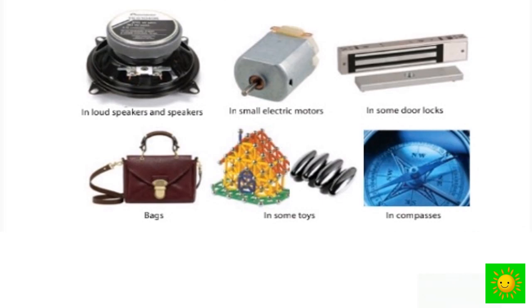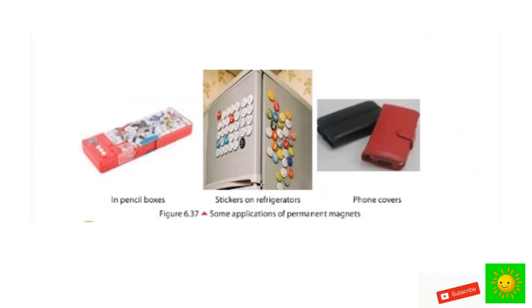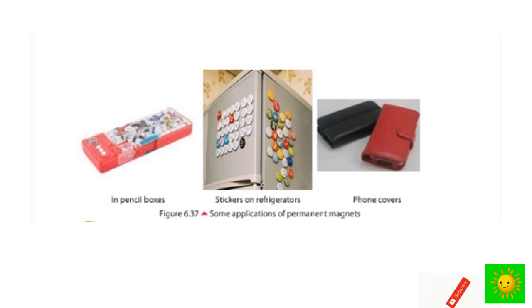Let's see the uses of permanent magnets. There are various devices found in day-to-day life where permanent magnets are used: in loudspeakers, in small electrical motors, in some door locks, in bags, in some toys, in compasses, in pencil boxes, in stickers on refrigerators, and in phone covers. Our next video is from Grade 8 Science on measurement associated with electricity technology. Thank you.